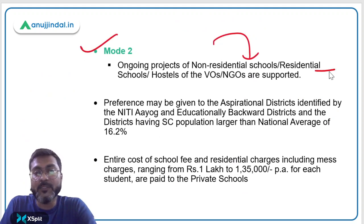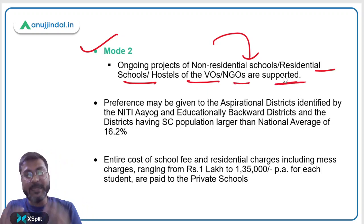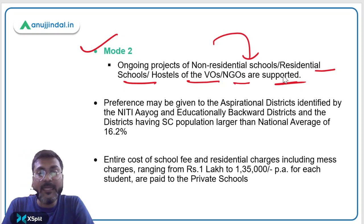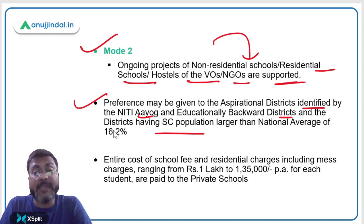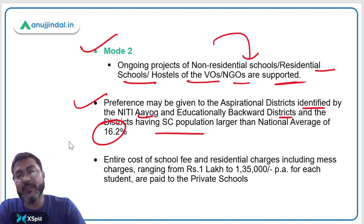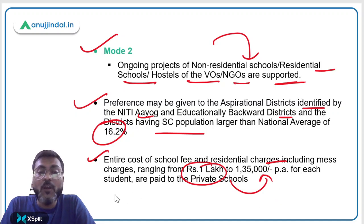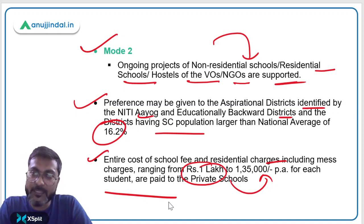Mode 2 supports ongoing projects of non-residential schools, residential school hostels run by voluntary organizations or NGOs. Key points: preference is given to aspirational districts identified by NITI Aayog, educationally backward districts, and districts with SC population larger than the national average of 16.2%. The entire cost — school fee and residential charges including mess charges, ranging from Rs. 1 lakh to Rs. 1.35 lakh per annum per student — is paid by the government to the private school.